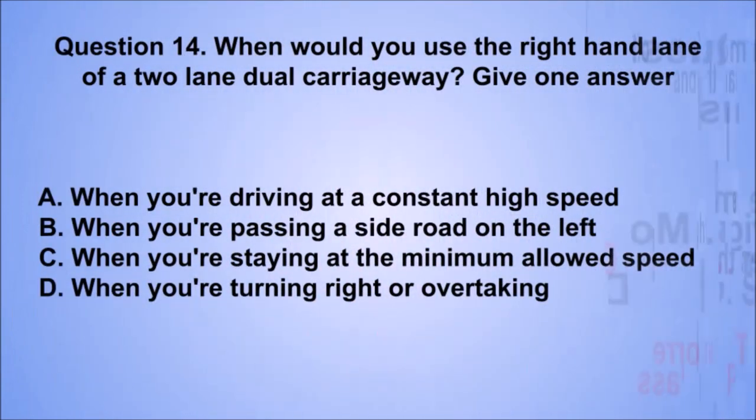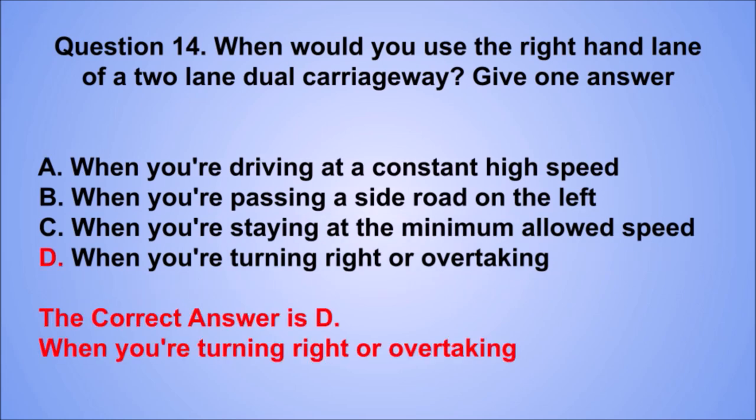Question 14. When would you use the right-hand lane of a two-lane dual carriageway? Give one answer. A: When you're driving at a constant high speed. B: When you're passing a side road on the left. C: When you're staying at the minimum allowed speed. D: When you're turning right or overtaking. The correct answer is D.